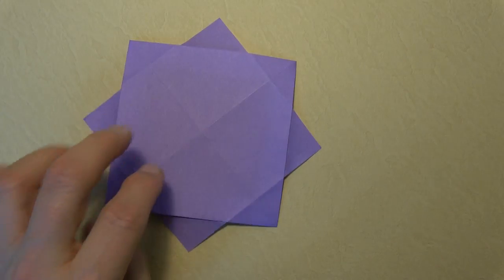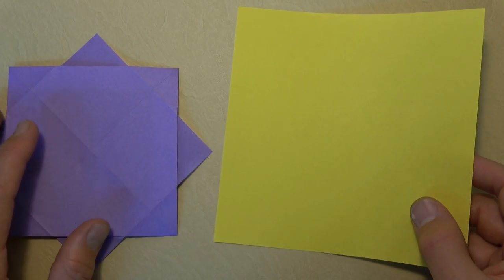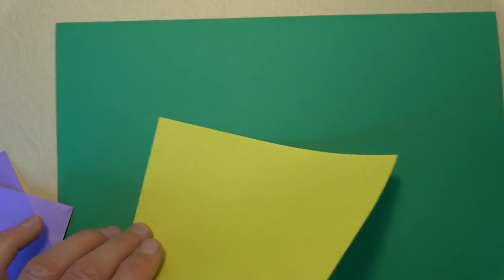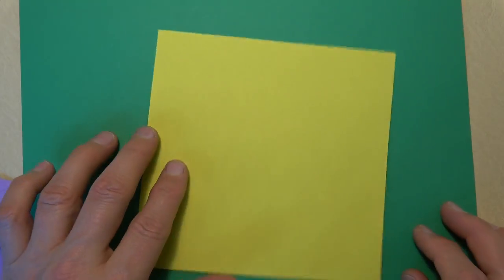All right, so for this eight-pointed star picture frame, I'm going to use a yellow six-inch square of origami paper. And just so that you can see it a little bit better, I'm going to use a sheet of green printer paper as my background.